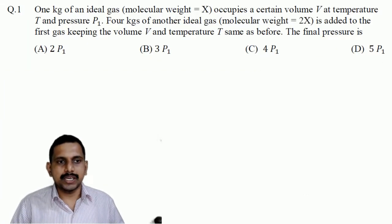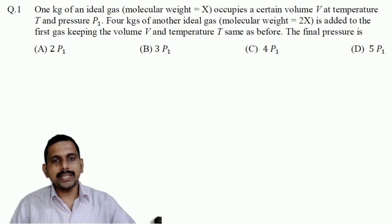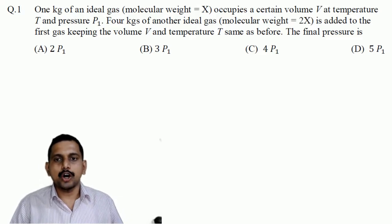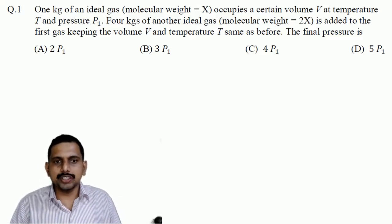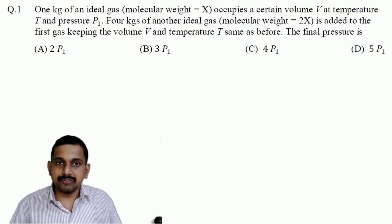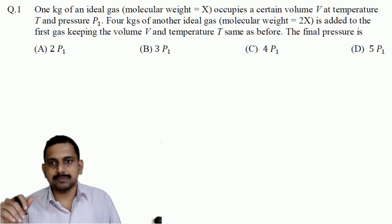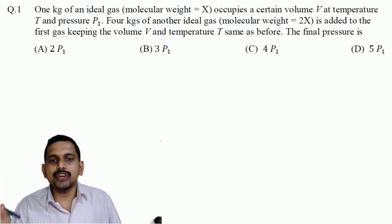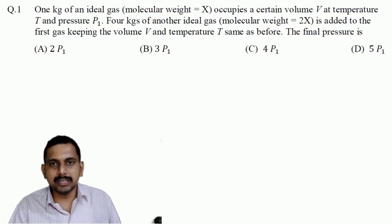The first question goes like this: 1 kg of ideal gas occupies a certain volume V at a temperature T and pressure P1. 4 kg of another gas is added to the first, keeping the volume V and temperature T the same as before. The final pressure is?